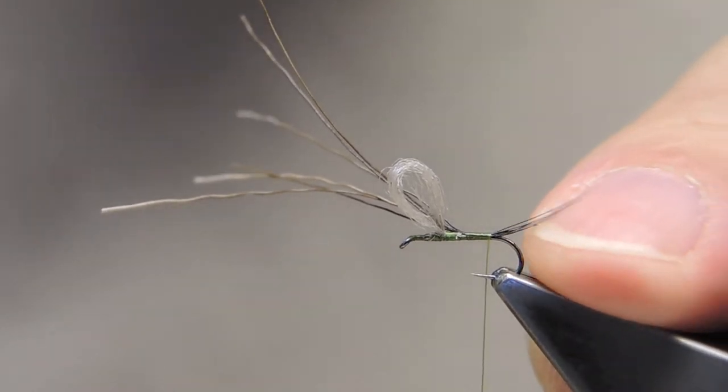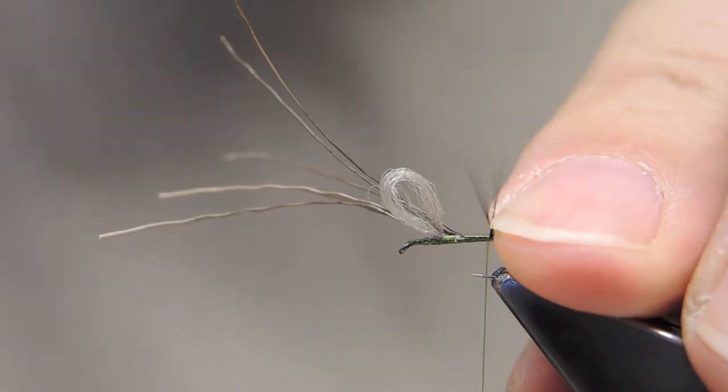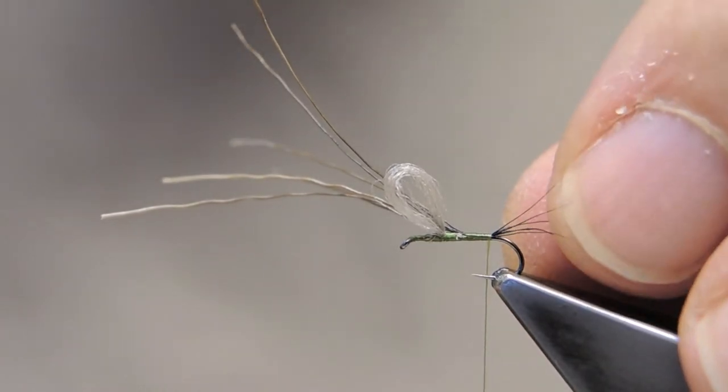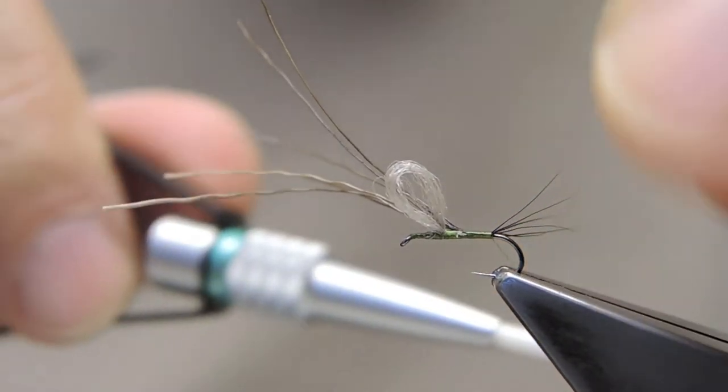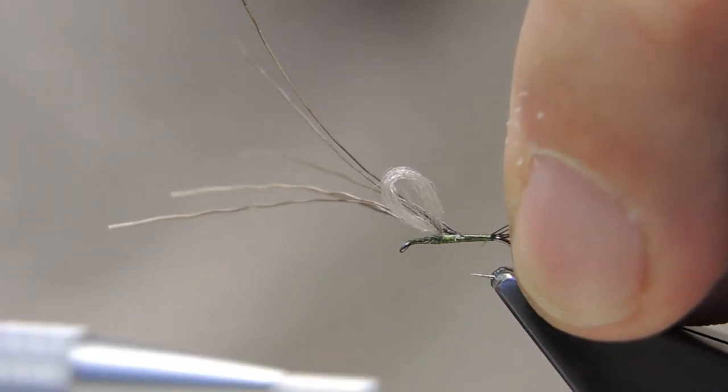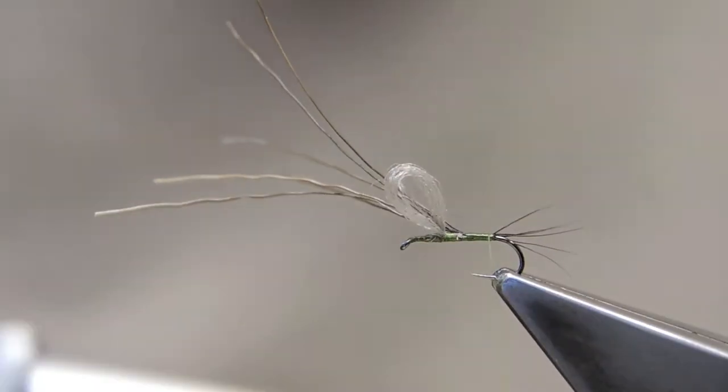The tail will be split, so just lift them up and take three strands on one side and three strands on the other, and make a permanent split by lashing down with the tying thread.